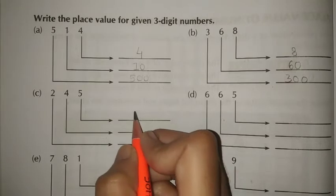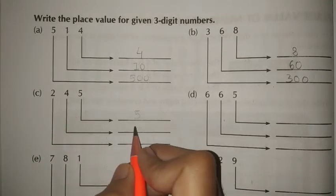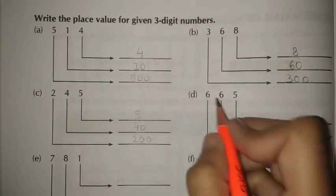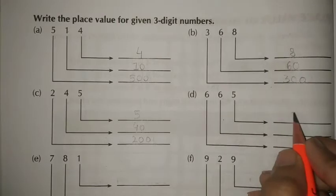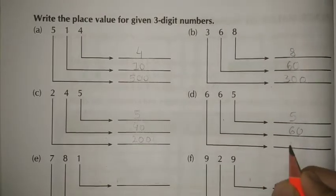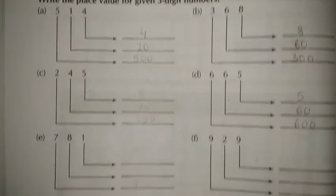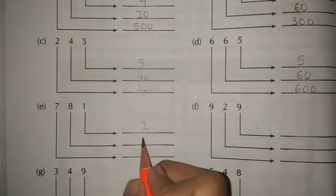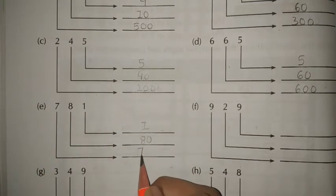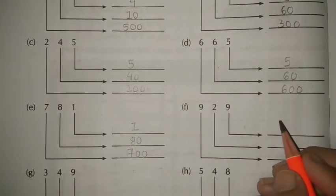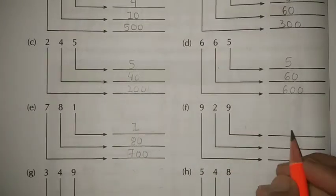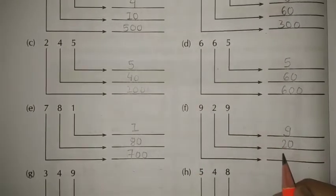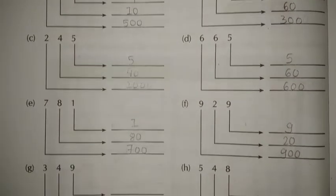Next, 245: 5 is ones, so here 5; 4 is tens, so 40; and 2 is hundreds, so 200. Next, 65x: 5 is ones; 6 is tens, so 60; and hundreds is 600. Further, 7 is tens — 70; and 9 is ones — 9; 2 is tens; and 9 is hundreds — 900.